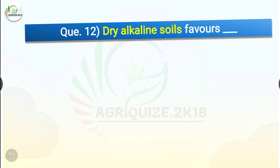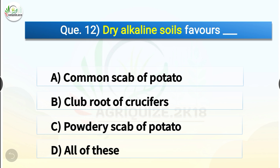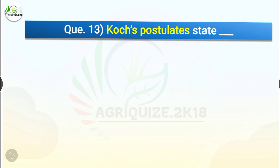Question number twelve: Dry alkaline soils favor dash. The options are common scab of potato, club root of crucifers, powdery scab of potato, or all of these. The correct answer is option A, common scab of potato. Common scab of potato is caused by Streptomyces scabies and occurs throughout the world. It is most prevalent in neutral or slightly alkaline soils, especially during relatively dry conditions.